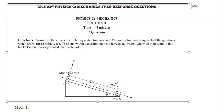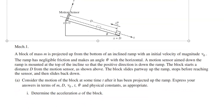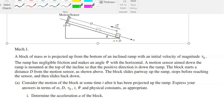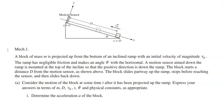We're just doing the first one right now. So solve it yourself and then check back in on the video. So let's go ahead and look at this problem. There's a little diagram. We have a block of mass M — I'll go ahead and label the little mass right there. It is projected upwards with an initial velocity of V₀ at an angle, no friction on this. It starts a distance D from the motion sensor.